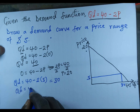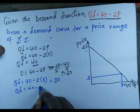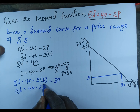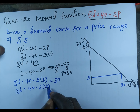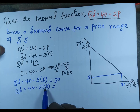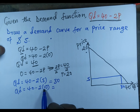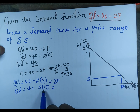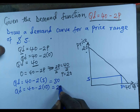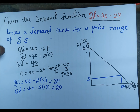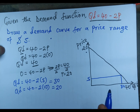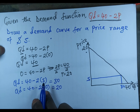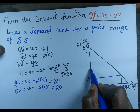For the next price level, P = 10: Qd = 40 minus 2 times 10 = 40 minus 20 = 20. So for a price of 10 US dollars, quantity demanded is 20 units.